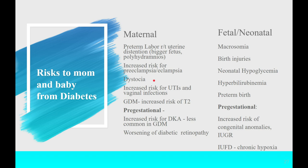There's increased risk of DVT from higher blood sugars, as well as increased risk for UTIs and vaginal infections because bacteria love sugar. If it's gestational diabetes, there is also an increased lifelong risk of developing type 2 diabetes.